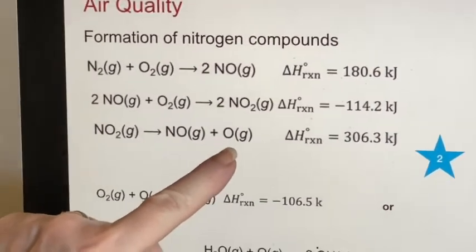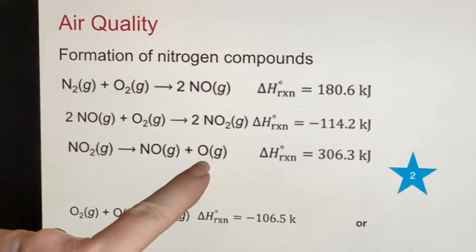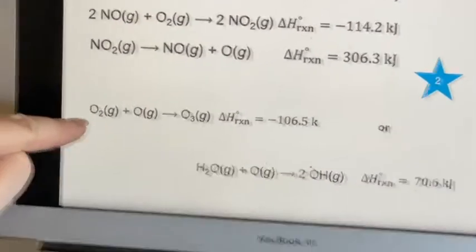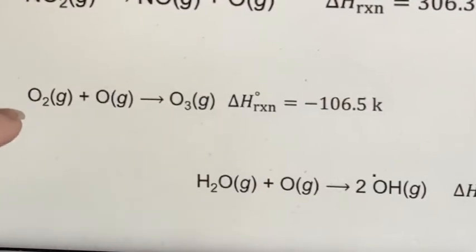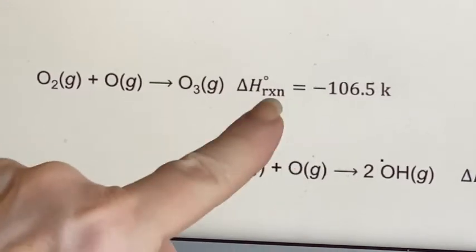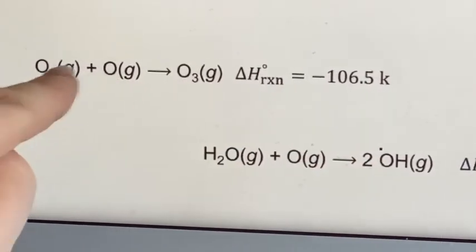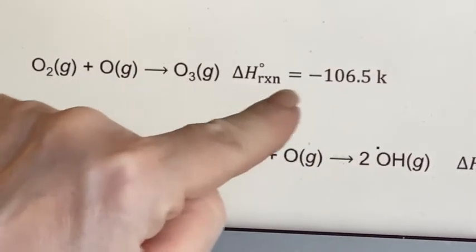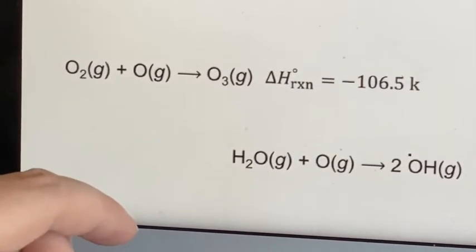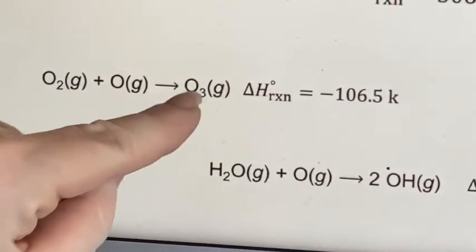What can happen though, is this single oxygen is not happy alone. If it encounters some oxygen as we normally have it in the atmosphere, it can make ozone. And in point of fact, if it does encounter it, it will tend to do that because here's the delta H, that's downhill. So it's like, oh, if it finds that O2, it'll make the ozone.